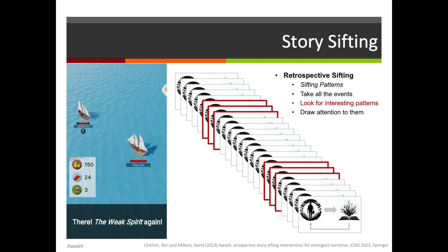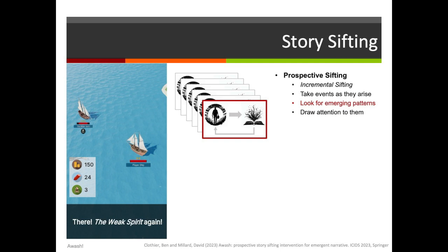A limitation of this kind of story sifting is that it has to be done retrospectively — essentially, the simulation has to have run, the data has to have been gathered, and you must be looking back on what has happened. An alternative is to do prospective story sifting, where you incrementally sift events as they arise and look for emerging patterns rather than completed ones — essentially, look for the first few events that show a pattern is being initiated, and then draw the player's attention to those.